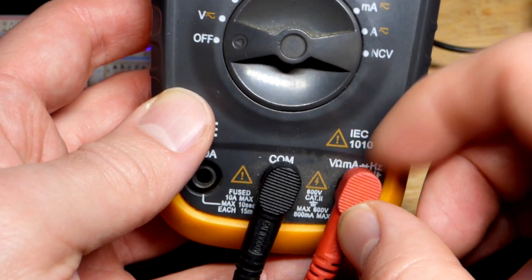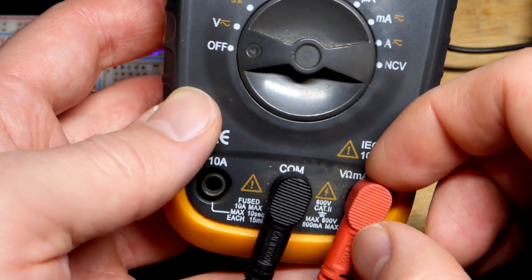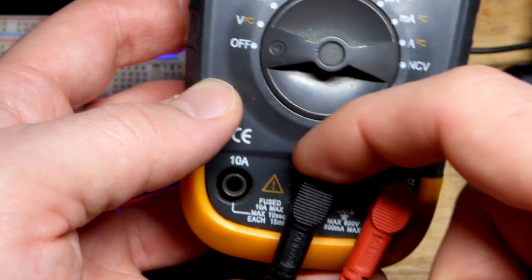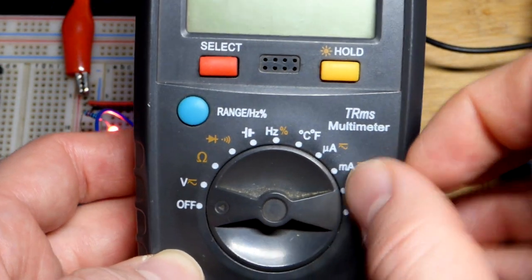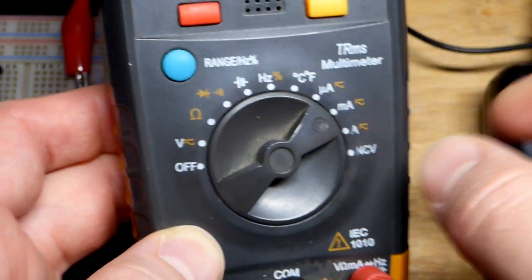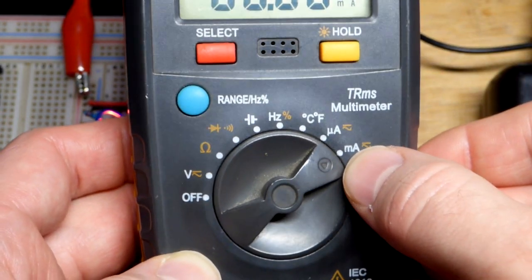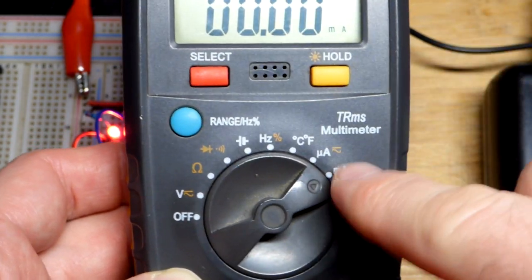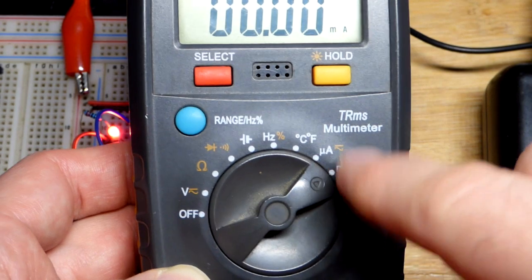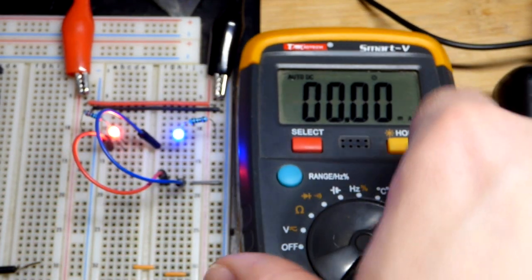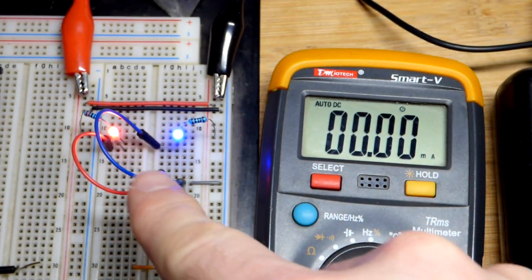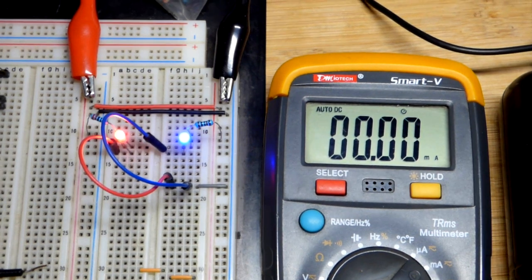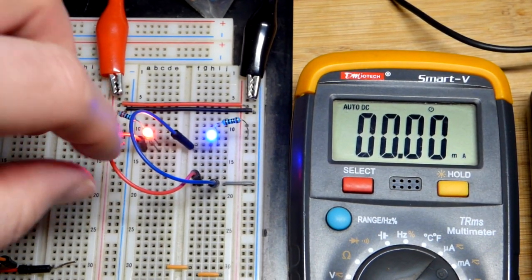Now, we have the meter. Make sure that it's at the milliamp setting. You leave the red probe there for everything other than high current, and then COM always is to that spot, the black probe, with this multimeter. So we're going to set it to measure milliamps. This will go up to 600 milliamps. Make sure that the number is higher, in milliamps in this case, than the amount of current that you're going to be measuring.